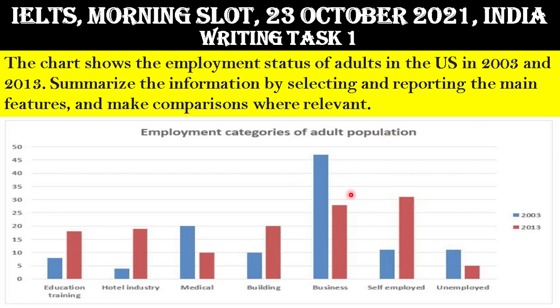Here is the bar graph divided into 2 years. Blue bars represent the year 2003 and dark red represents the year 2013. The bar graph is divided into 7 categories: first is education training, second is hotel industry, third is medical, fourth is building, fifth is business, sixth is self-employed, and seventh is unemployed.